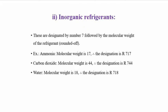The chemical formula for R22 is CHClF2. Similarly, R12 is CCl2F2 and from the derivative of ethane we have R134a that is C2H2F4. For inorganic refrigerants, these are designated by the number 7 followed by the molecular weight. For example, ammonia has molecular weight 17 and is designated R717; carbon dioxide has molecular weight 44 and is designated R744; water has molecular weight 18 and is designated R718.